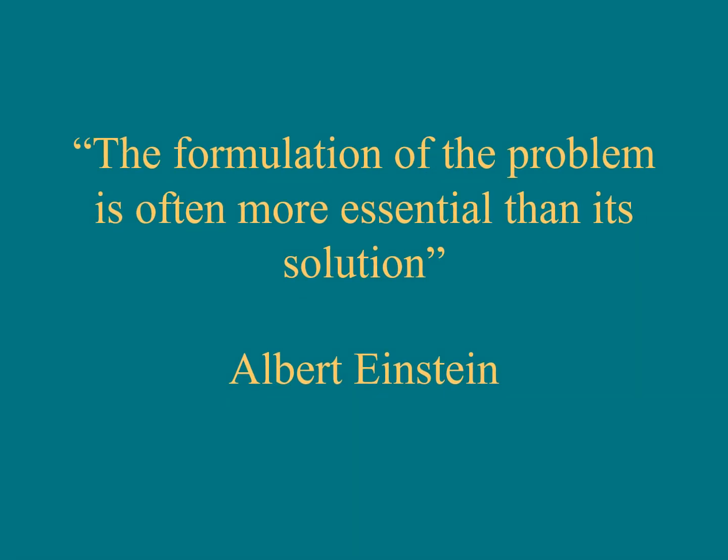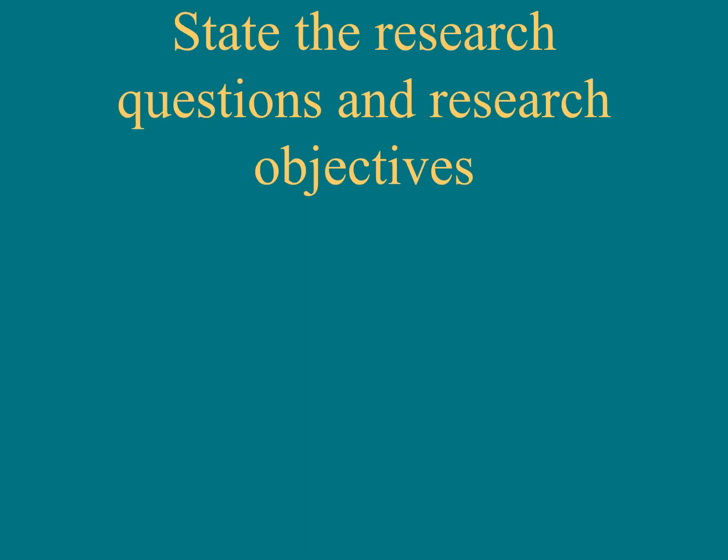The formulation of the problem is often more essential than its solution, as taught by Albert Einstein. A researcher must initially decide precisely what to research. After identifying and clarifying the problem — with or without expert input — the researcher should make a formal statement of the problem and the research objectives. This statement delineates the type of information that should be collected and provides a framework for the scope of the study.